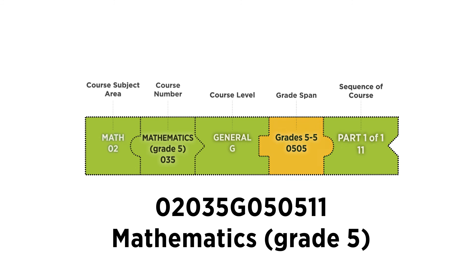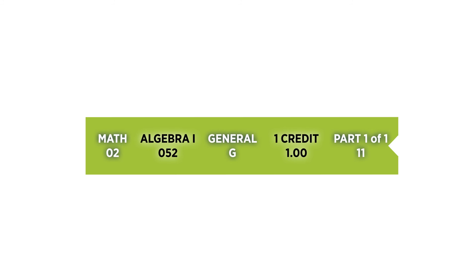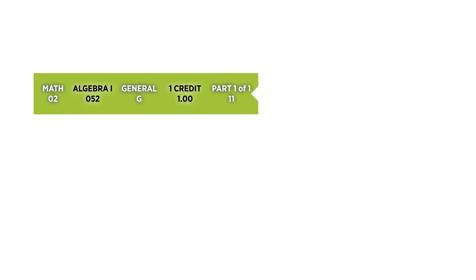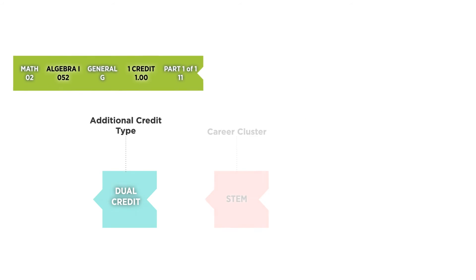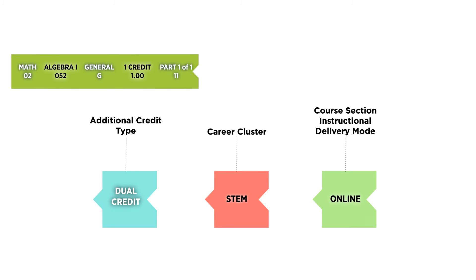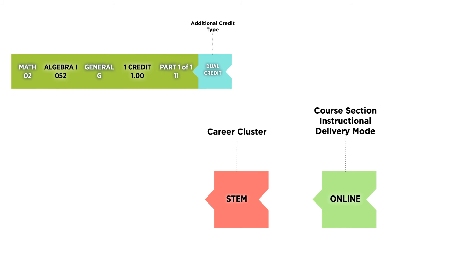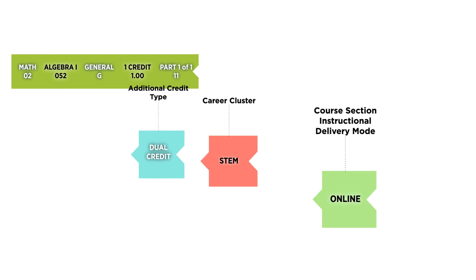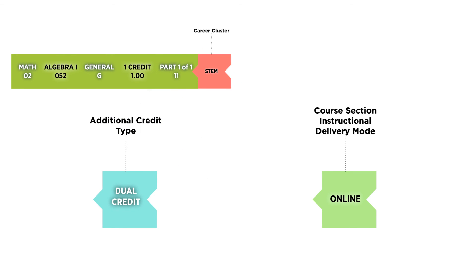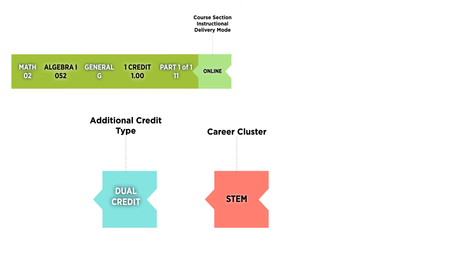The SCED framework is flexible enough that states and districts may choose to add additional course attributes that are not part of the SCED identifier, like whether a course offers dual high school and college credit, an indicator of whether or not it is a designated STEM course, or the setting or medium of delivery for the course.